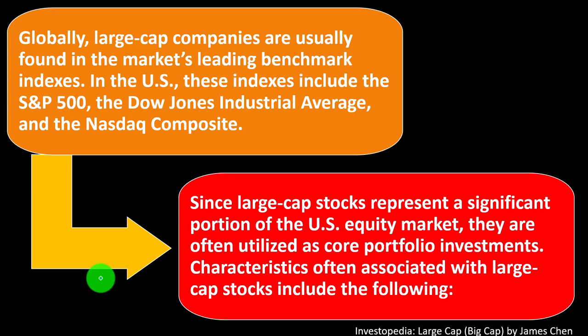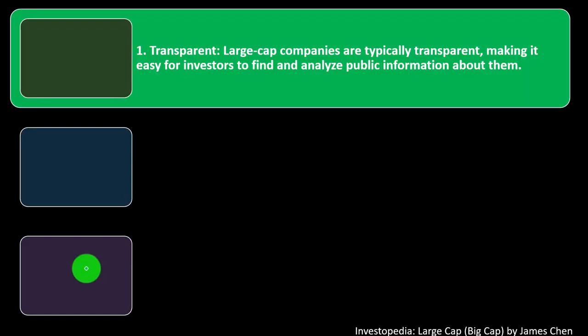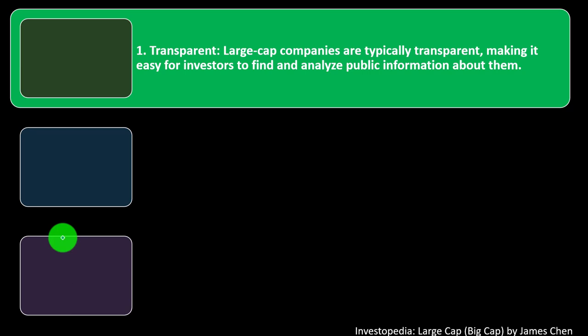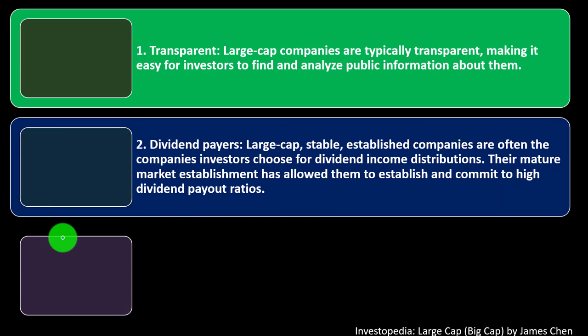Characteristics often associated with large cap stocks: Number one — transparent. Large cap companies are typically transparent, making it easy for investors to find and analyze public information about them. U.S. exchanges allow you to drill down on information to make investment decisions. When everybody has accurate information, two parties with different objectives can make a market transaction efficiently — which is why transparency matters for both markets and government entities.